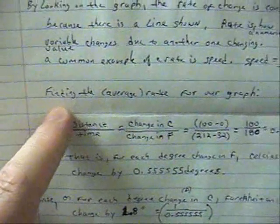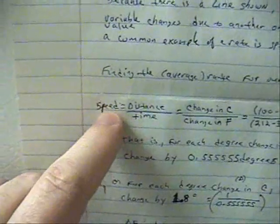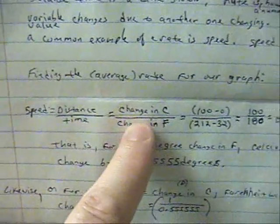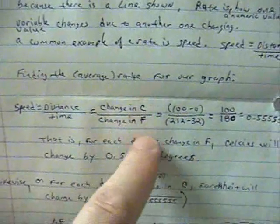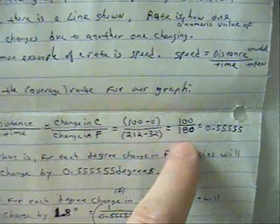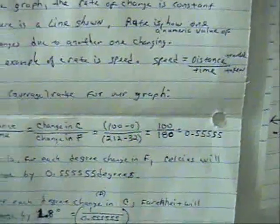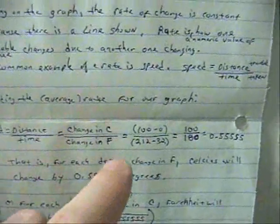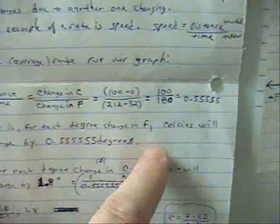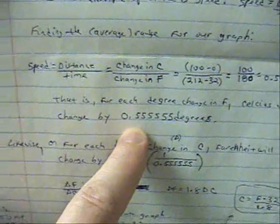So, finding the average rate for the graph, we have change in Celsius divided by change in Fahrenheit, we would get a hundred between those two points on the graph, divided by 180, and that's 0.555, and it goes on. That is, for each degree change in Fahrenheit, Celsius will change by 0.555 degrees.